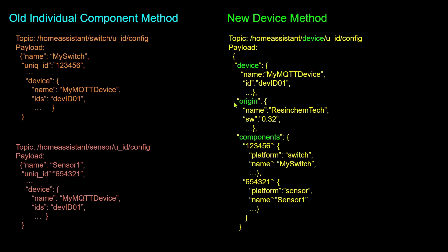The origin section, which is now required when using the device discovery method, consists of at least a name but optionally can also contain a software version and a support URL. These origin details are logged in the Home Assistant core event log when an item is discovered or updated. The new components key contains individual nested subkeys for each entity or component. The unique ID is used as the key with a new platform type that specifies the entity type like switch, sensor, or light. The remainder of the keys are basically the same as the individual component method.